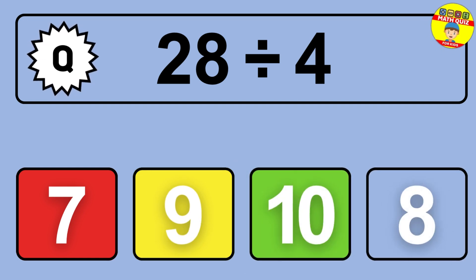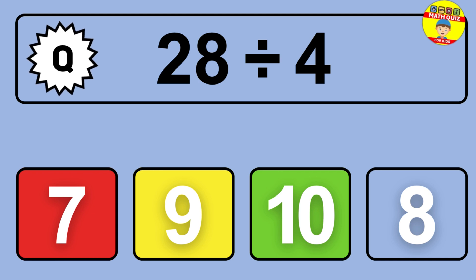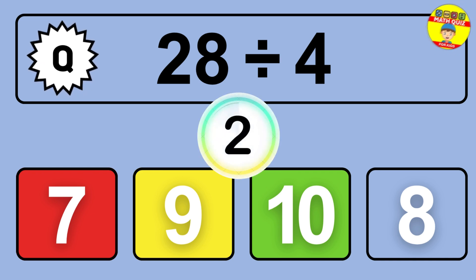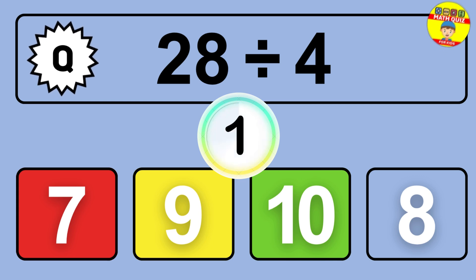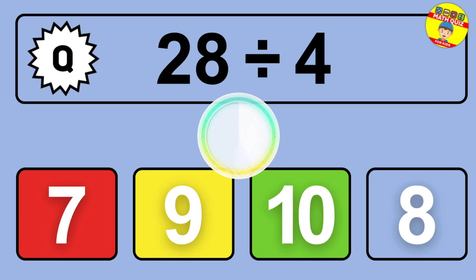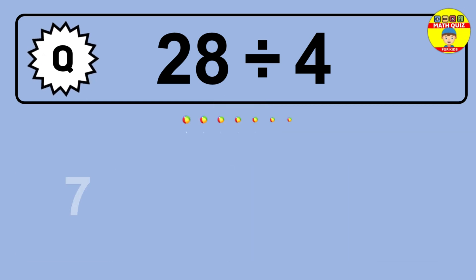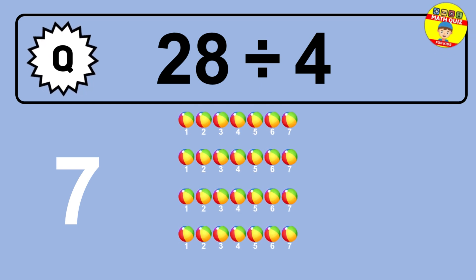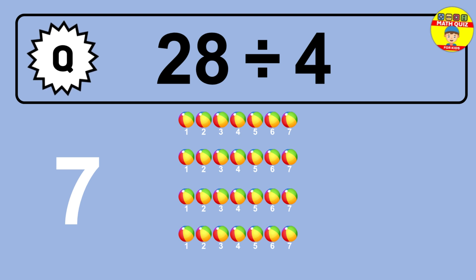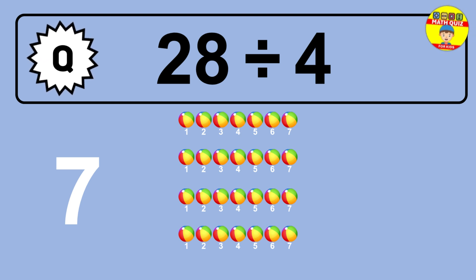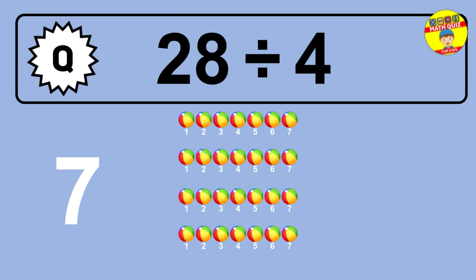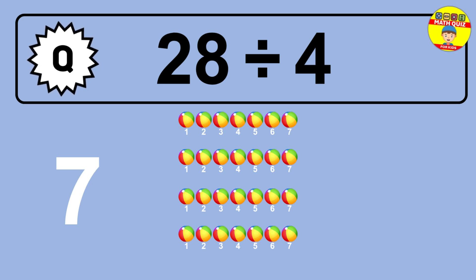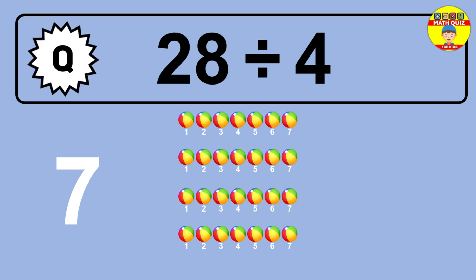28 divided by 4 is... time to think. Let's go to the solution. Divide the number 28 by 4. Each group contains 4 units, so dividing 28 by 4 results in 7 equal groups. Thus, the result is 28 divided by 4 equals 7.